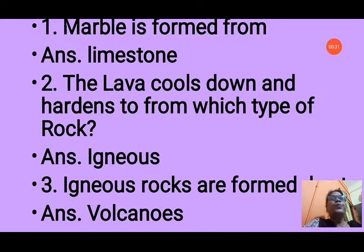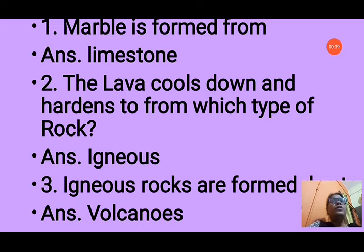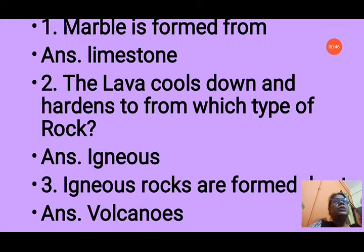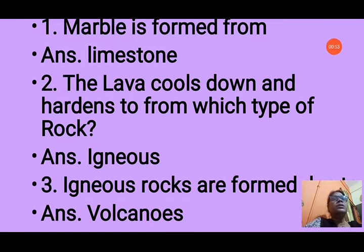Question 2: When lava cools down and hardens, which type of rock is formed? Options are: A. metamorphic, B. sedimentary, C. igneous, D. none of these. The answer is C, igneous, because the word igneous means fire. When lava comes from a volcano, it cools and hardens to form igneous rock.